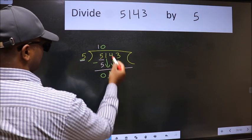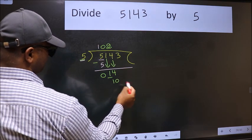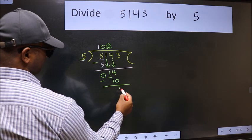A number close to 14 in the 5 table is 5 twos 10. Now we subtract. We get 4.